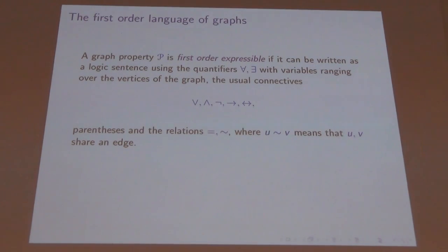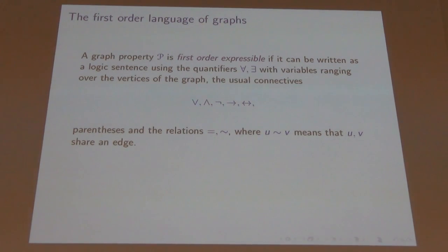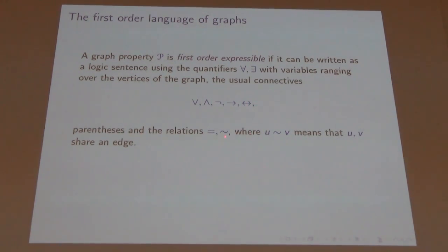I guess we can assume that everybody knows what a graph is. We're interested in properties of graphs, like being connected or having a triangle. I'm going to restrict attention to properties which can be expressed by a certain kind of formula — a mathematical formula where you can use the standard quantifiers for all and there exists, with variables that range over the vertices of your graph.